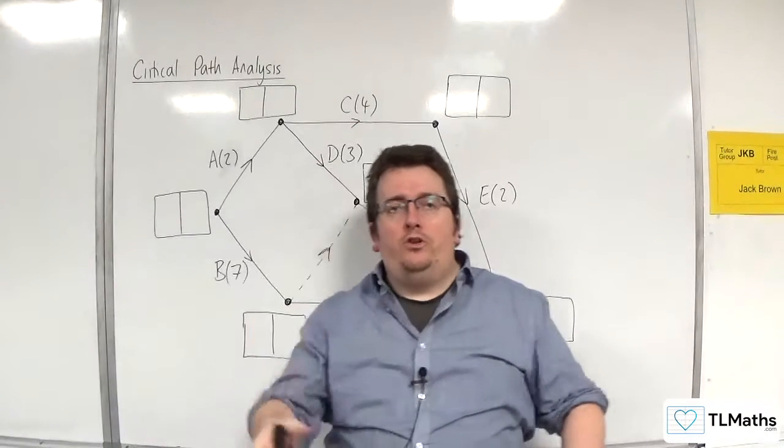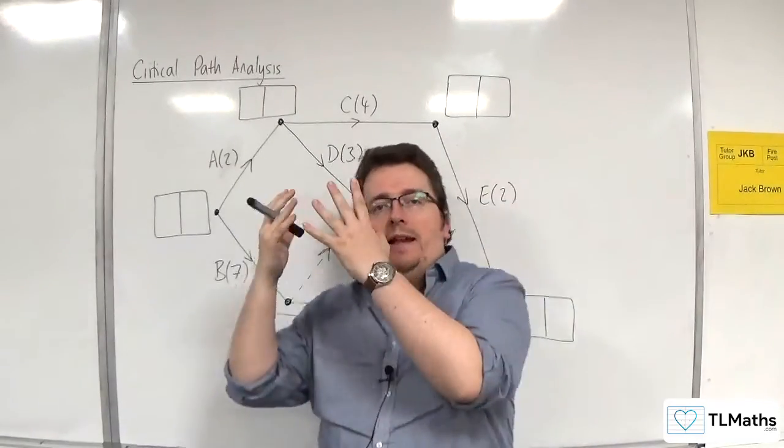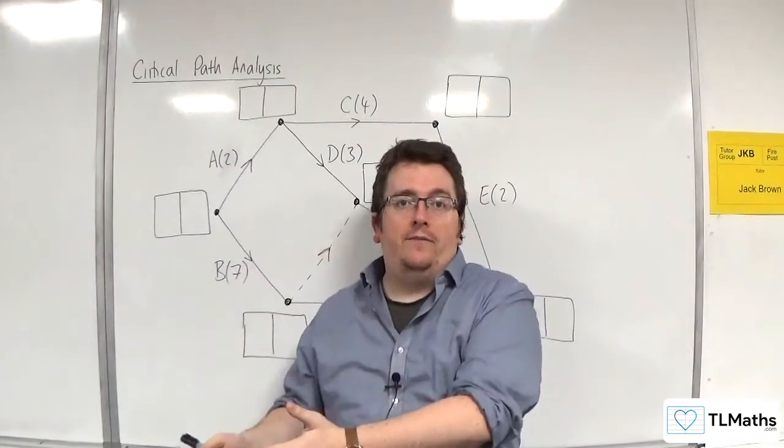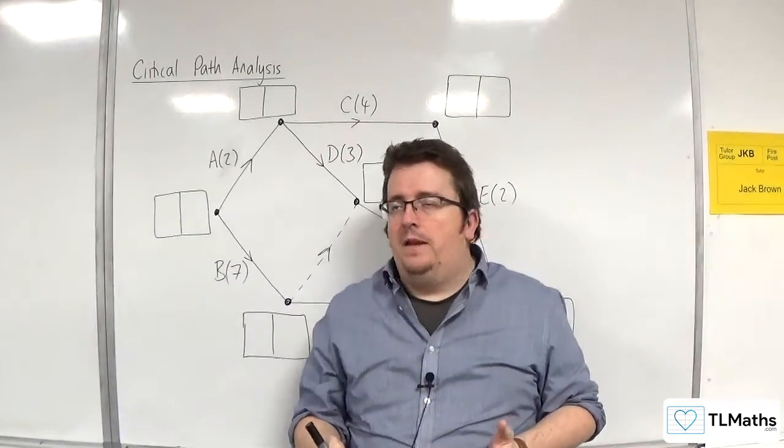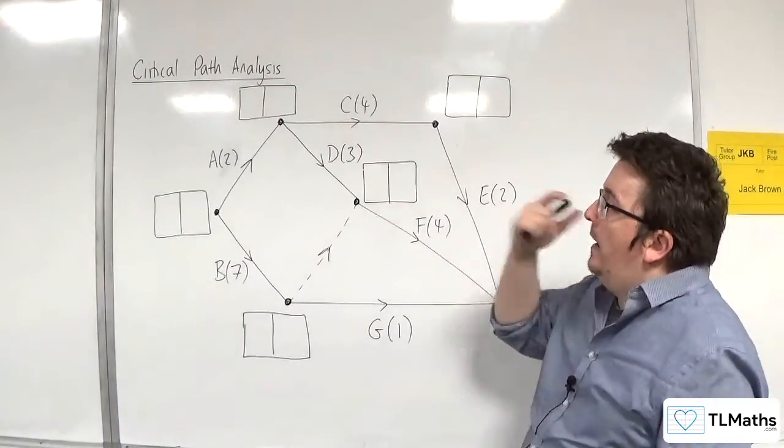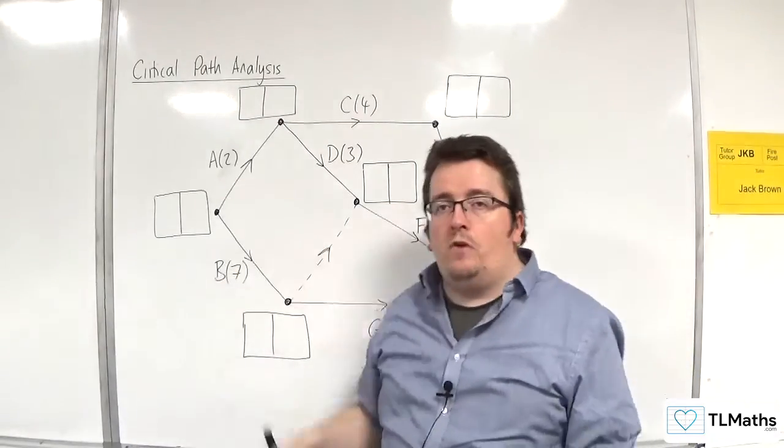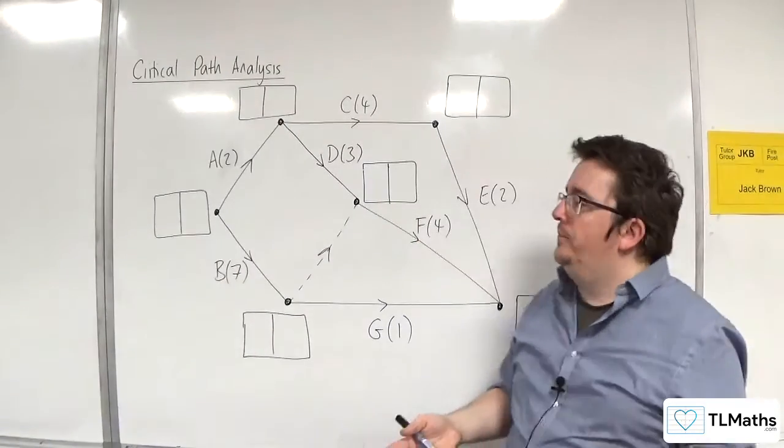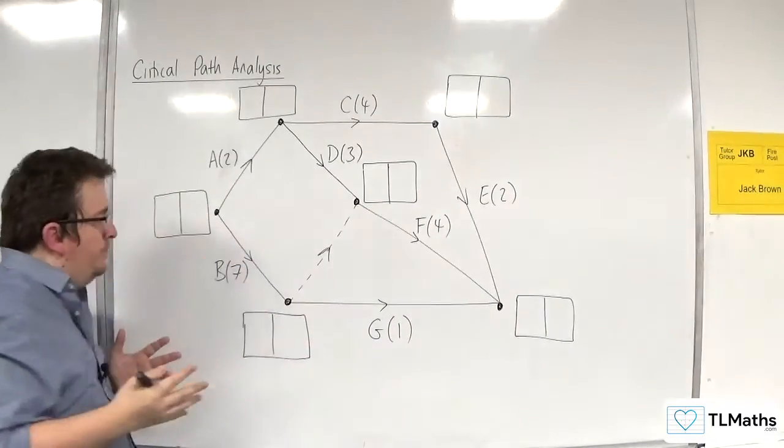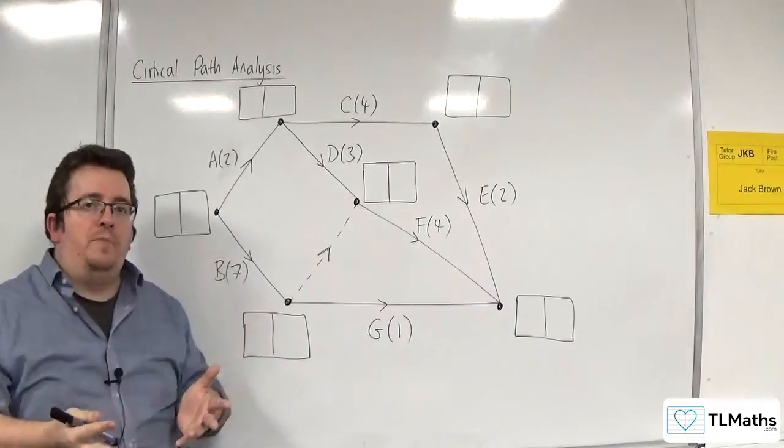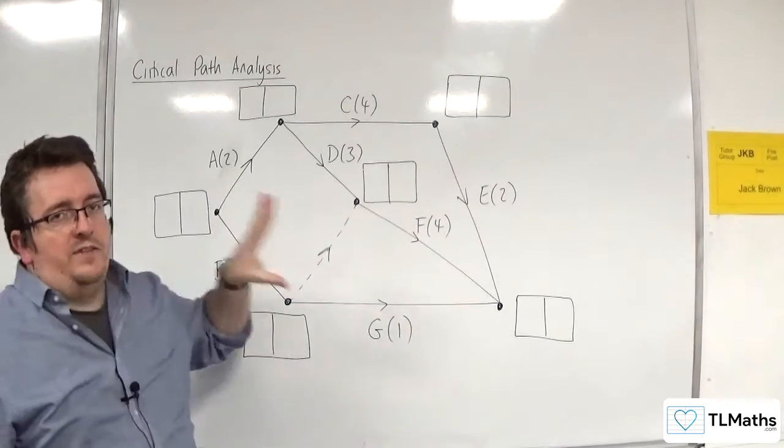So in the previous video, I introduced what these boxes represent, that the left hand box means the early event time and the right hand box is the late event time. And we now have the activities on our arcs with their durations, so how long they take to complete. So what we want to do, the end goal here, is to figure out what is the earliest time that we can complete this project.